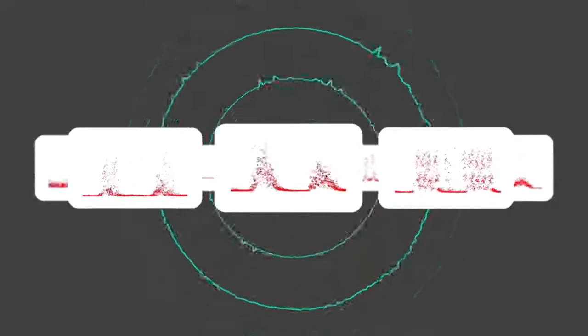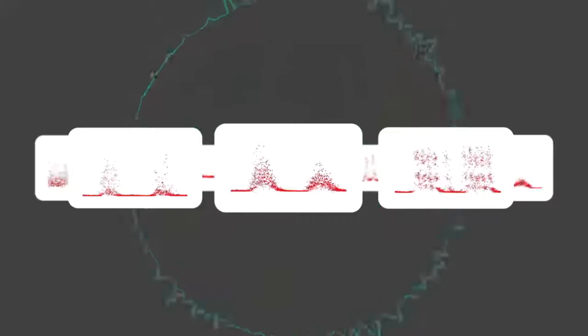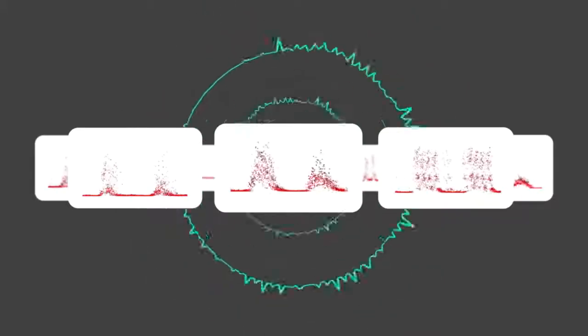To be able to decide on corrective actions, you need to know the type of the partial discharge. The discharge pattern displayed here is typical for a surface discharge.